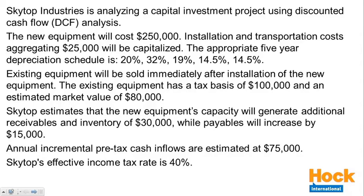The question is about Skytop Industries, and we're going to have three capital budgeting questions, each about a different year of the project. Skytop Industries is analyzing a capital investment project using discounted cash flow analysis. The new equipment will cost $250,000. Installation and transportation costs aggregating $25,000 will be capitalized. The appropriate five-year depreciation schedule is 20%, 32%, 19%, 14.5%, 14.5%.